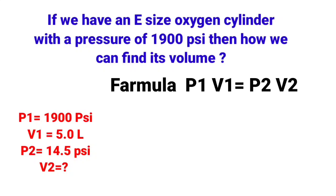P2 is 14.5 psi, it is the atmospheric pressure. V2, we want to find it. According to the above formula, now we will put these numbers and will find volume 2. Rearrange this formula: V2 is equal to P1 multiply by V1 and divide by P2.